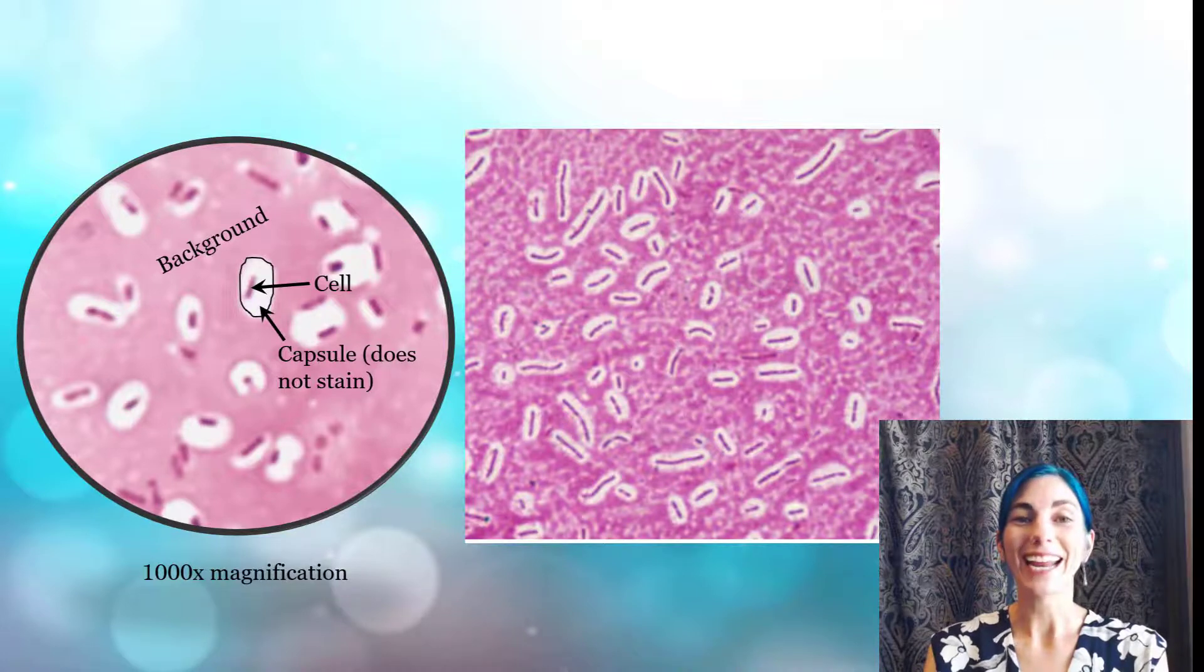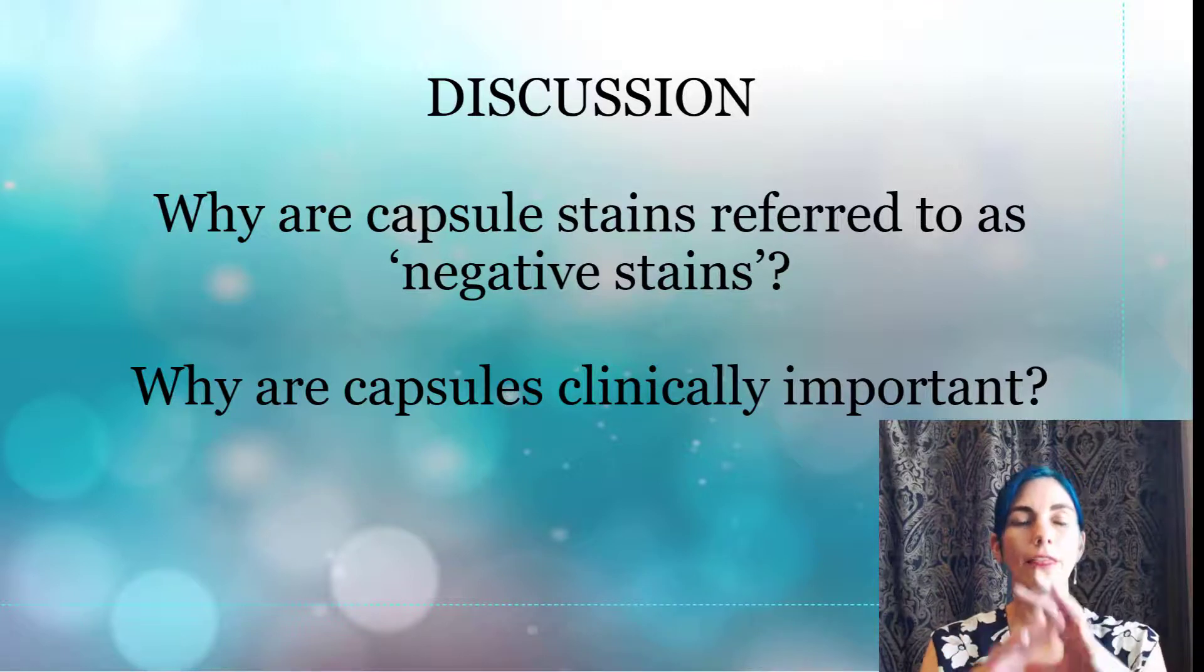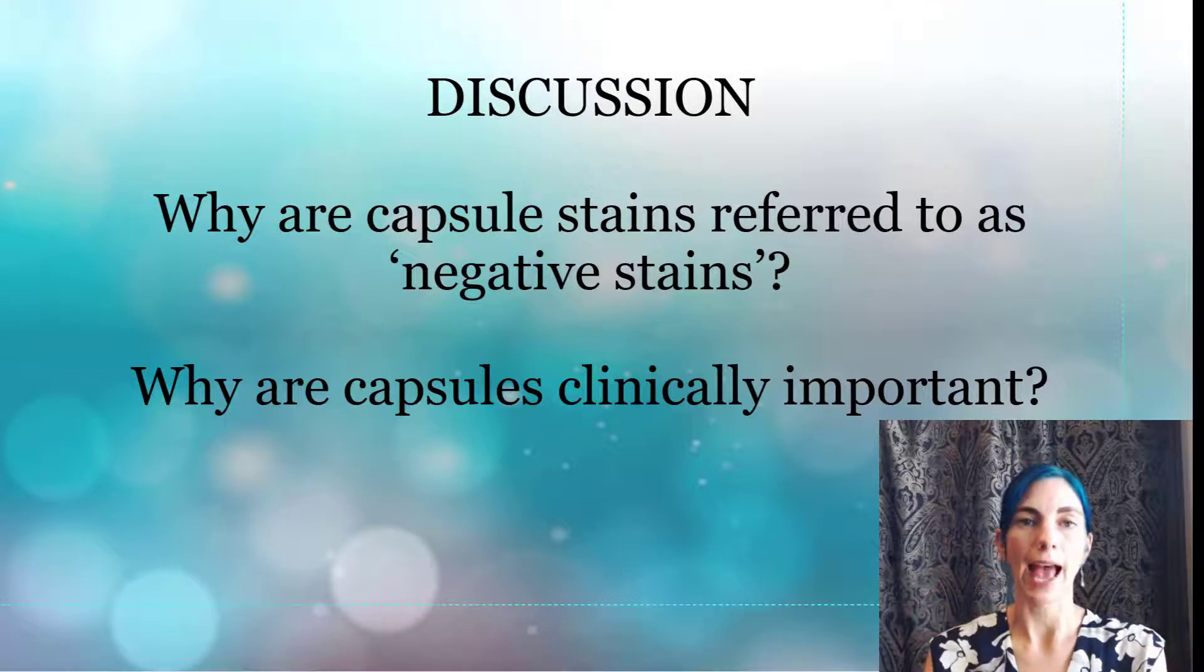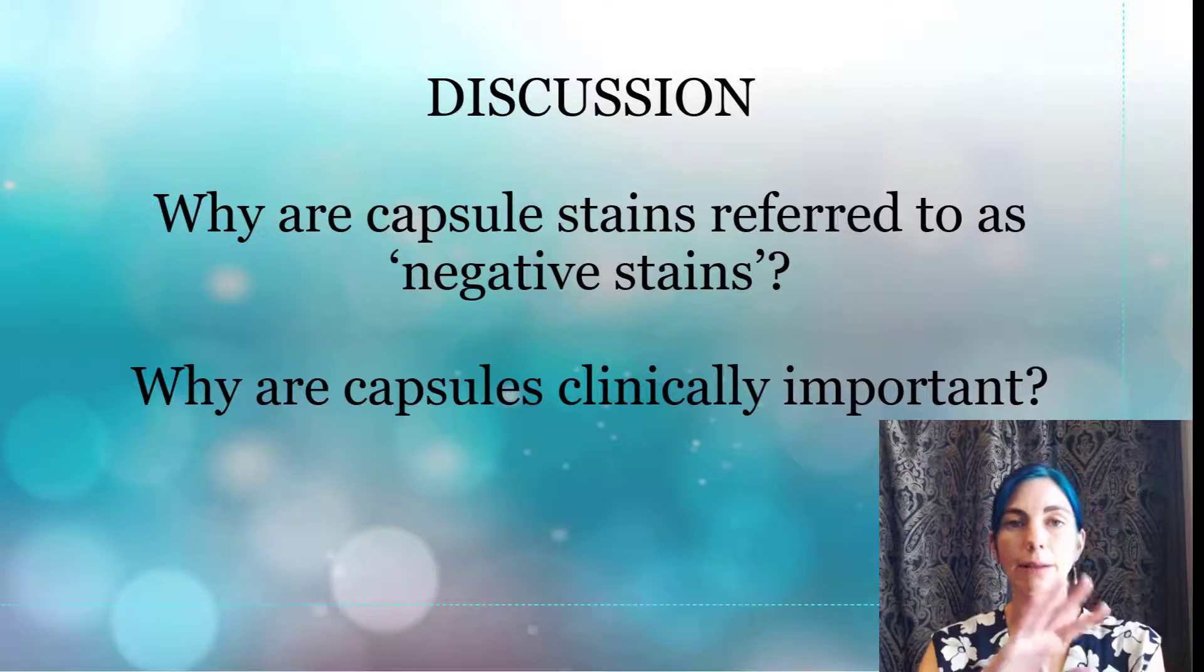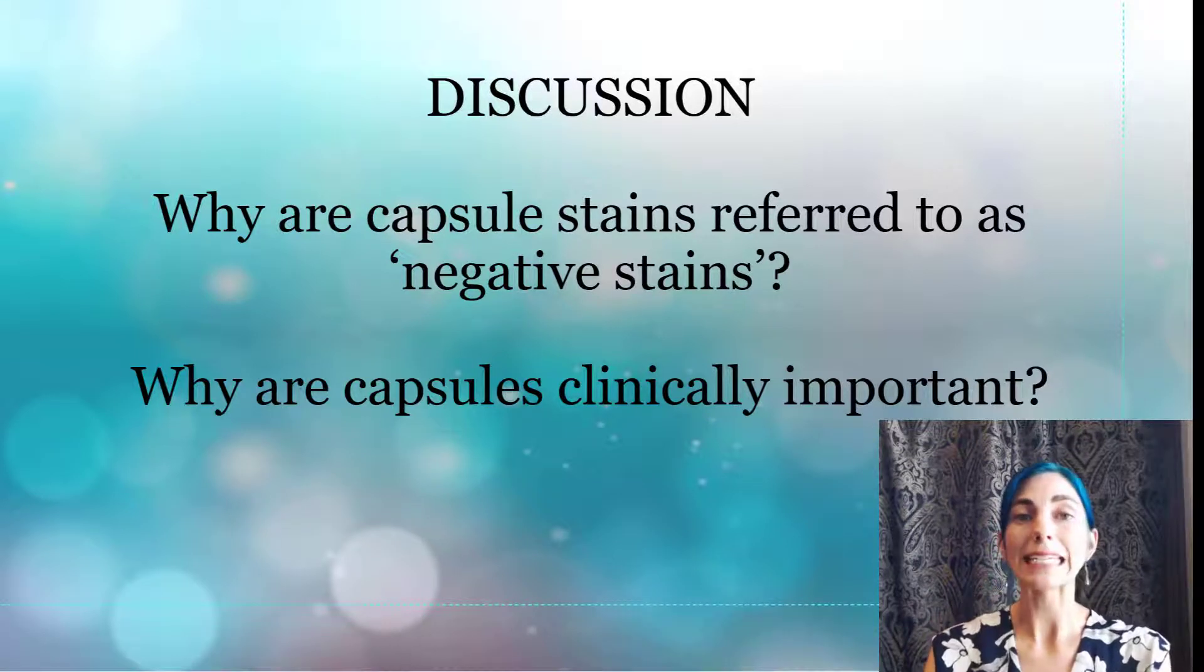Alright now that you're done let's briefly talk about some of these discussion questions. So I mentioned already that capsule stains are referred to as negative stains. The phrase negative stain means that everything else gets stained but what you're looking at. In this case the capsule stain is going to stain the background and the cells so that only the capsule remains unstained.